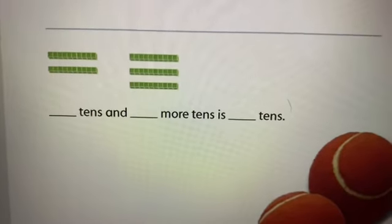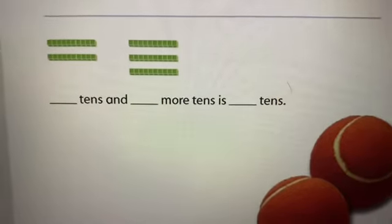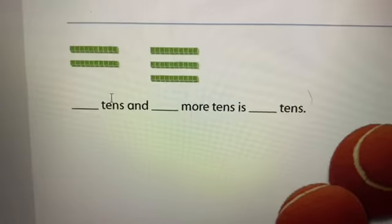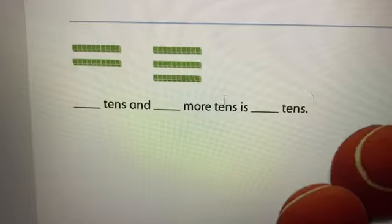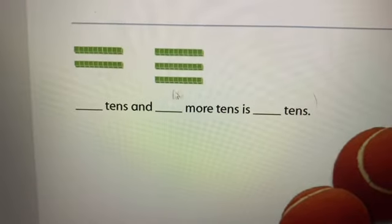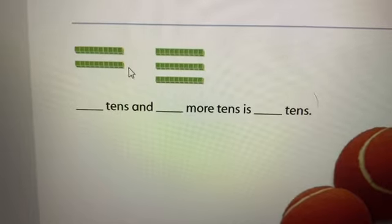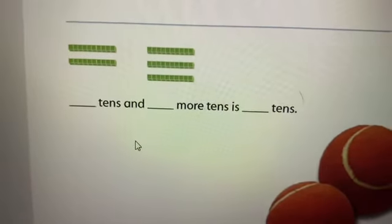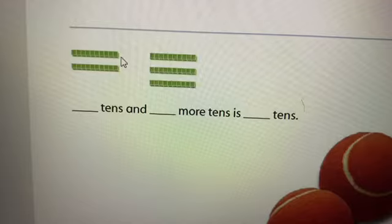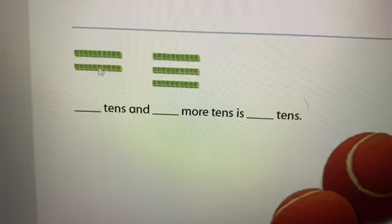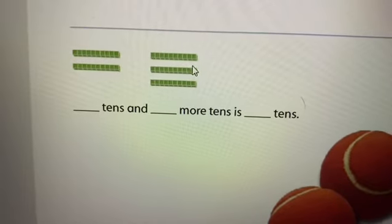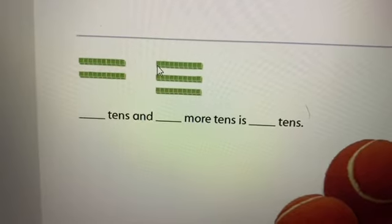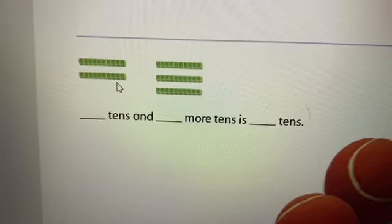So here are more 10 sticks. So how many 10s are first? Let's see how many are here. How many 10s? 1, 2, 3, 4, 5. 5 10s. So 2 10s plus 3 10s is 5 10s. Or we can say 20, because there's 20 ones here, plus 3 is 30. 3 10s is 30. So 20 plus 30 is 10, 20, 30, 40, 50.